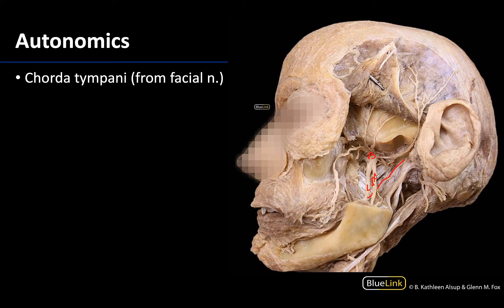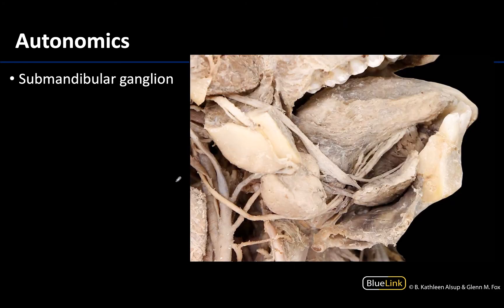Now we are talking about the chorda tympani in this autonomic session because preganglionic parasympathetics destined for the submandibular ganglion are going to be part of the chorda tympani, in addition to special sense fibers of taste from the presulcal part of the tongue. Recall that chorda is a branch of the facial nerve or cranial nerve 7. The preganglionic parasympathetic fibers of chorda tympani are going to synapse in the submandibular ganglion, which we can see a little bit of right here.